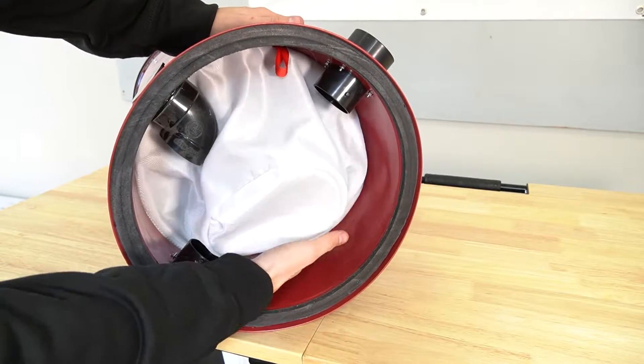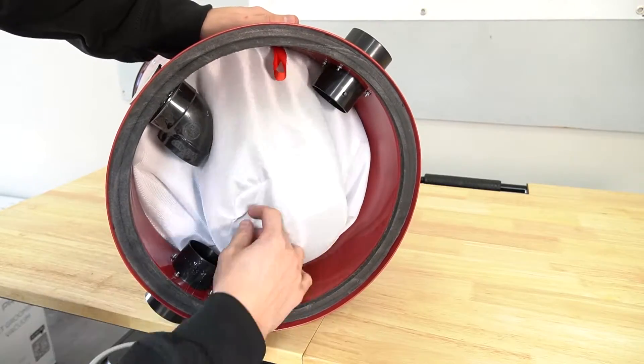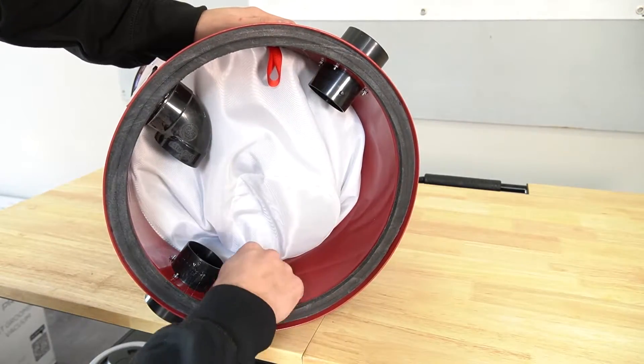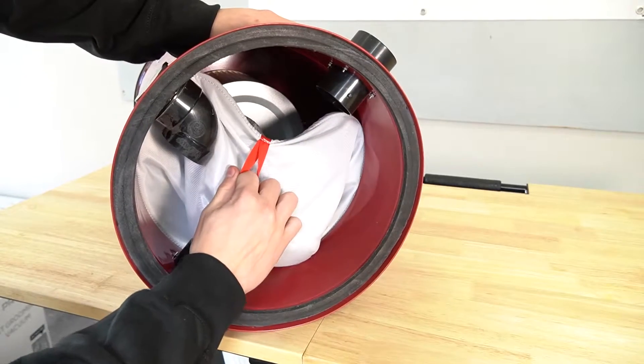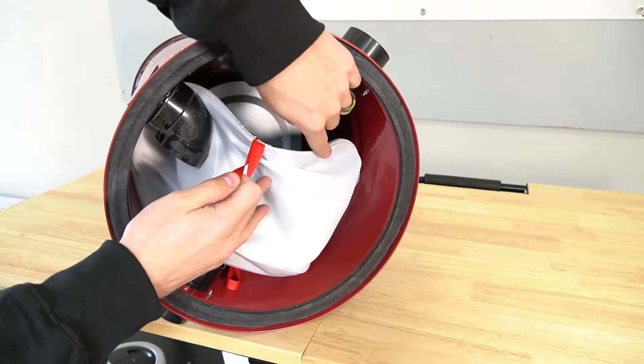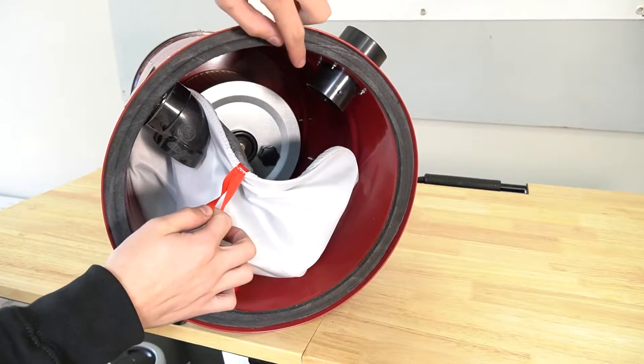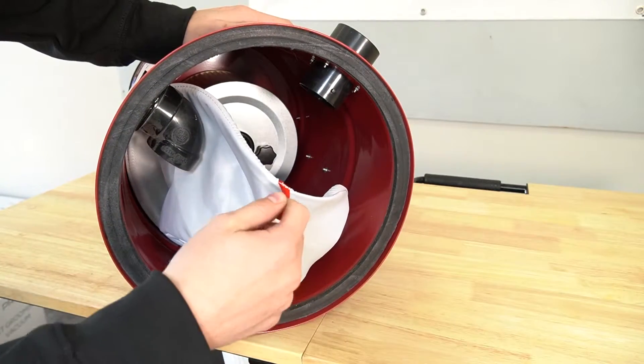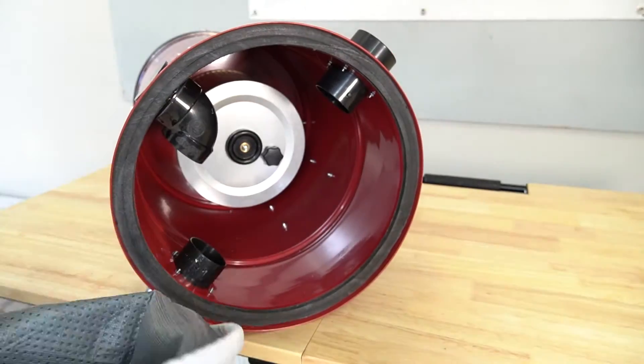Here's the cloth filter. You have a red tab on each side. Grab that red tab and carefully pull the filter out. There's a metal band inside the filter that fits in this groove. If you're not careful it'll snap and pinch your fingers.